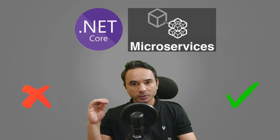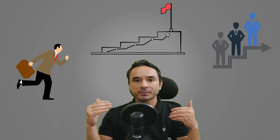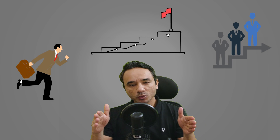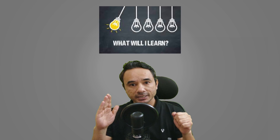Someone says: 'I don't know .NET Core but I want to learn microservices.' Setting a goal is a very good thing, but if we don't set goals in the right manner, we won't be able to complete them. Our goals should follow a step-by-step approach. If you are a .NET developer, in this video I'm going to share five step-by-step learning goals for you. At the end, you'll know which goal is best for you.